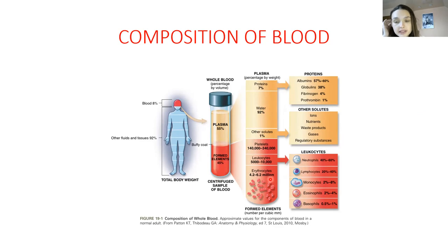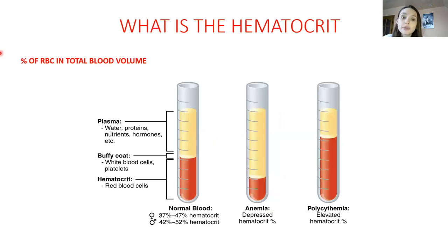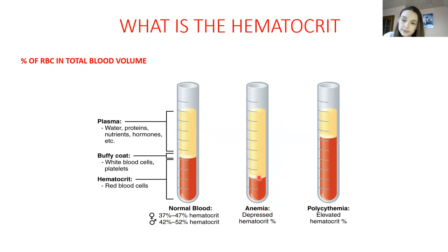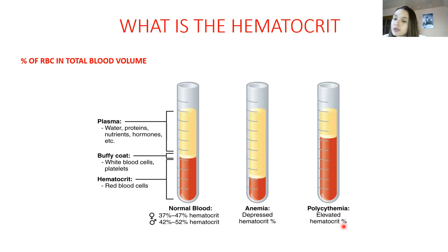The percentage of red blood cells in the blood is called hematocrit. The normal value of hematocrit for females is about 37 to 47 percent, and for males 42 to 52 percent. Hematocrit can change — it decreases in anemia, where the total plasma volume stays stable but red blood cells decrease. Polycythemia is a situation where hematocrit is increased — a small amount of plasma and a large amount of red blood cells.